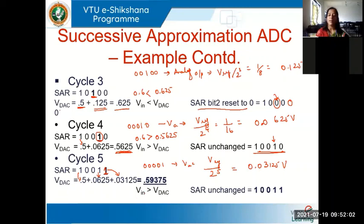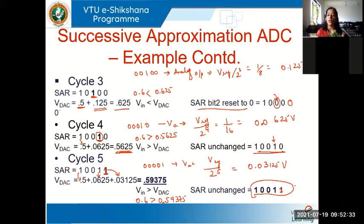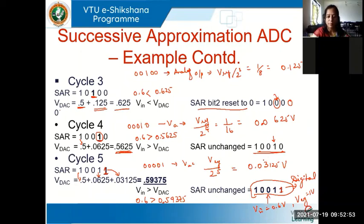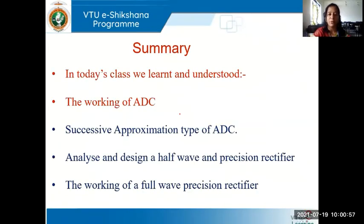Since we are done with all 5 bits, the digital output of this example will be 10011, corresponding to an analog input of 0.6 volts with a reference voltage of 1 volt. I hope you understood it much more clearly with this example. Please ask if you still have any doubts. Next, we'll analyze why a precision diode and precision rectifier is needed and the working of precision rectifiers in detail in the next class.